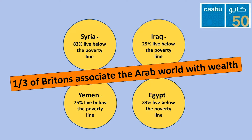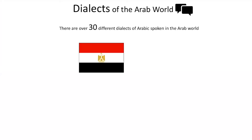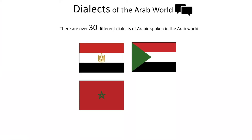We've briefly looked at the diversity of landscapes in the Arab world and touched on the differences in wealth that exist there. Now let's talk about language. As I said earlier, there are 30 different dialects of Arabic spoken across the Arab world, meaning 30 different types of Arabic. For example, in Egypt they speak a slightly different Arabic to Sudan, and in Morocco they speak a slightly different Arabic to Algeria, and so on.